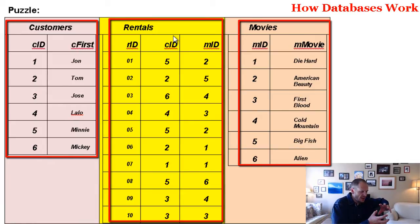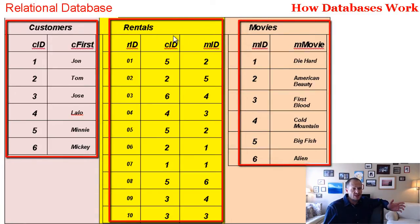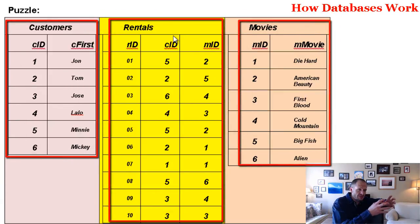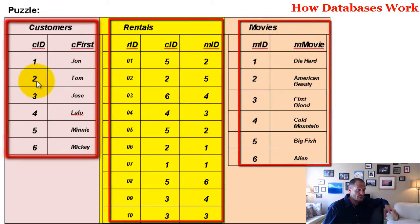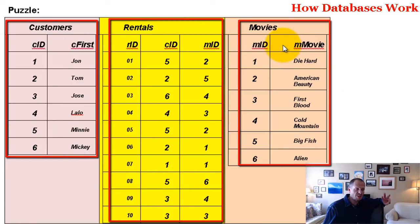Then I group all the information about my rental transactions into a table. That information about rental transactions, while it will have a little information from the customer and a little information from the movies, is different — it's really about which customer rented which movie. So we've got three tables here, and this is the relational database model. The first thing to understand is that we group like information into tables: all customer data in the customers table, all movie data in the movie table, and all rental transaction information in the rental table. This diagram represents the bare-bones database for a video rental store.